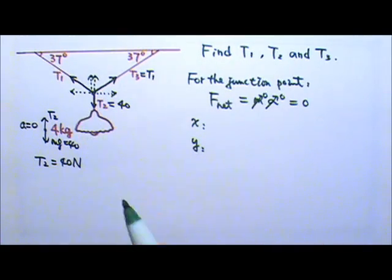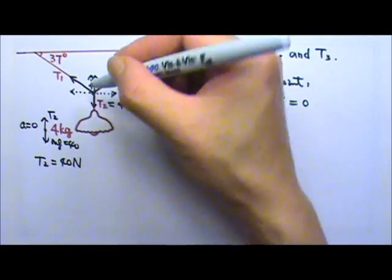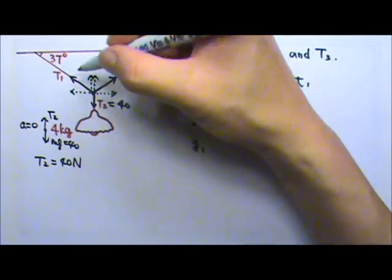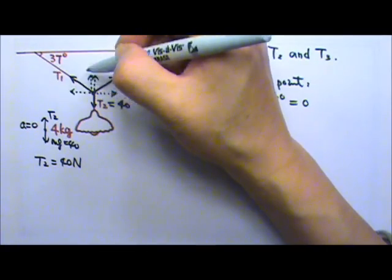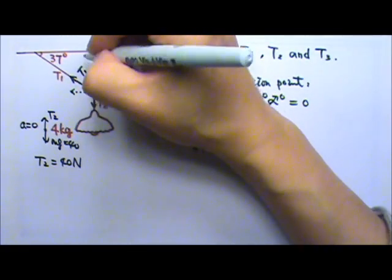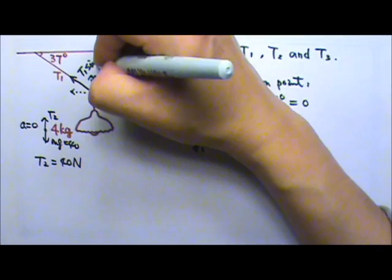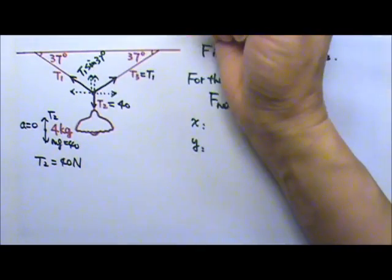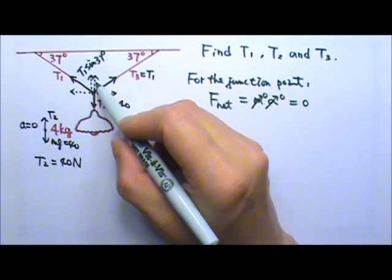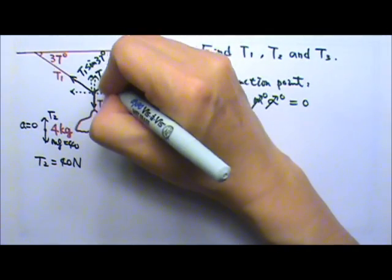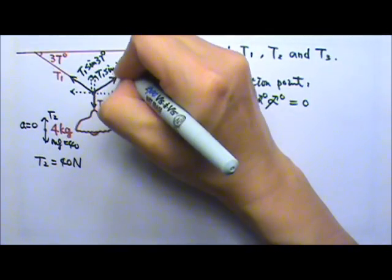The up and down are equal. The upward component is opposite to the 37 degrees, so the upward component is T1 times sine 37 degrees. And then the other side, it's going to be exactly the same. So this is also T1 times sine 37 degrees.